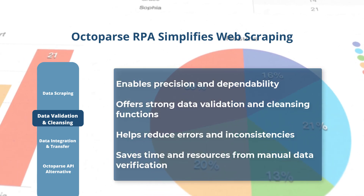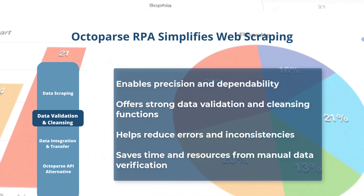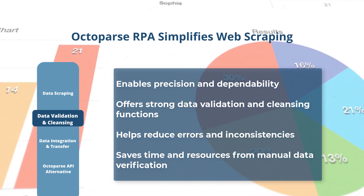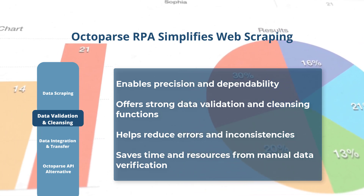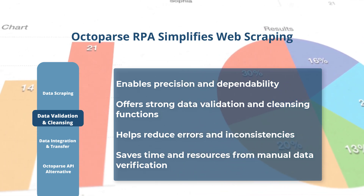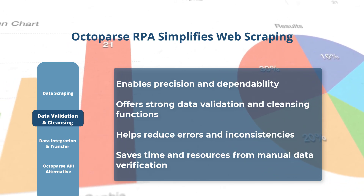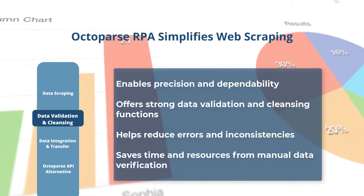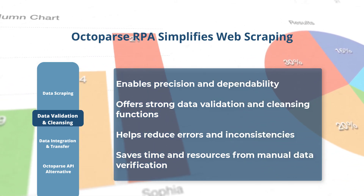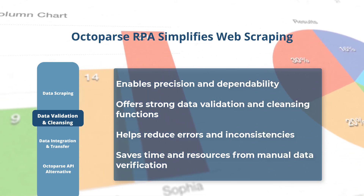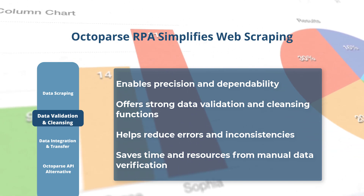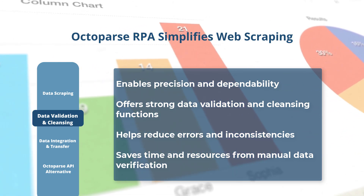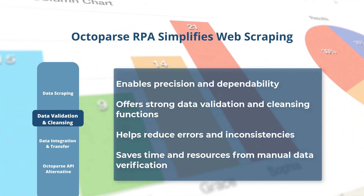Data validation and cleansing: With Octoparse RPA, you can ensure the accuracy and reliability of your scraped data. It provides robust validation and cleansing capabilities, allowing you to verify and clean the collected data automatically. This helps you eliminate errors and inconsistencies, saving you time and effort in manual data verification.